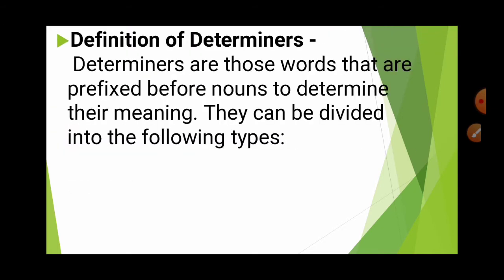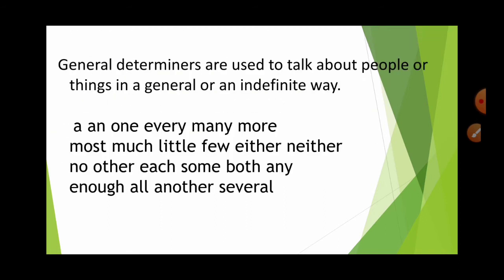Now let us go through the types. There are two types: general determiners and specific determiners. General determiners are used to talk about people or things in a general sense, that means for all — in an indefinite way.